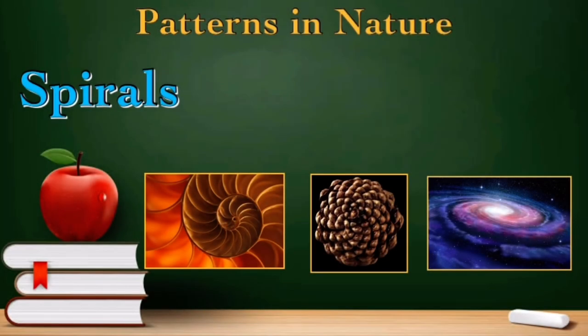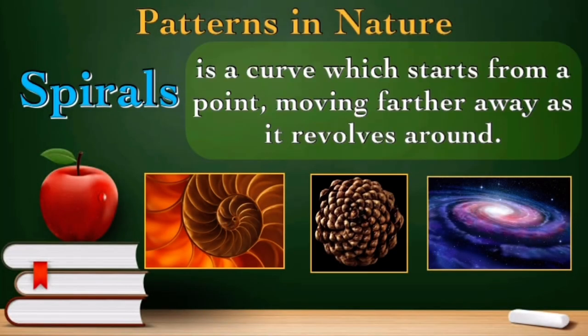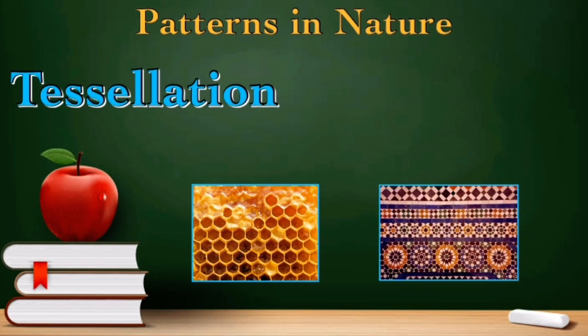The first kind of pattern is the spiral. Spirals are curves which start from a small point, moving far away as it revolves around. It gets bigger and bigger, but the pattern is not changing. We have for example the snail shell, the pine cone, and even our galaxy, the Milky Way. These are examples of spirals.